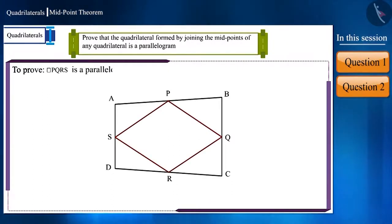We are given this and we have to prove that the quadrilateral PQRS formed by joining these points is a parallelogram. Friends, when can PQRS be a parallelogram? When a pair of its opposite sides are parallel and equal. So, let's prove it.